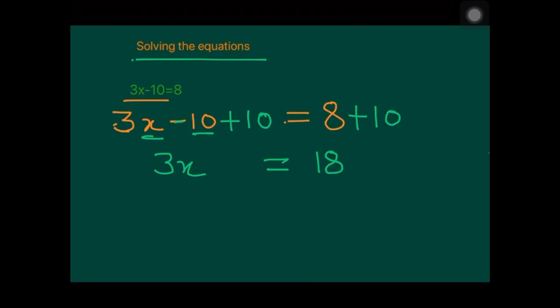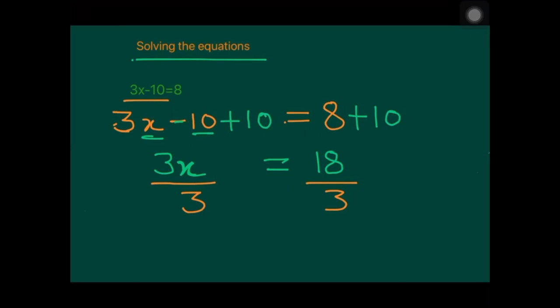Now we have 3x equals 18. Since x is multiplied by 3, we divide both sides by 3. This gives us x on the left side and 18 divided by 3 equals 6 on the right side. So x equals 6. This is one method — the step-by-step method of adding or subtracting from both sides.